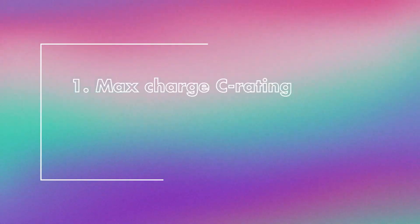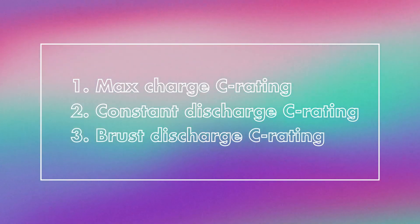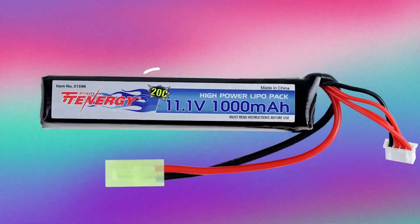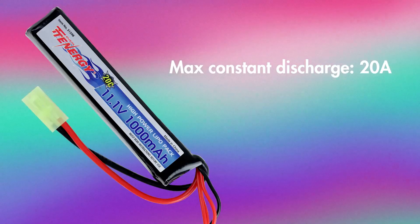There are usually three different types of C ratings that you'll need to pay attention to: the max charge C rating, the maximum constant discharge C rating, and a burst discharge C rating. The C rating you usually see printed on a battery is the maximum constant discharge C rating. For example, on this battery here, it has a C rating of 20C, so it's able to discharge 20 amps of current in about three minutes.